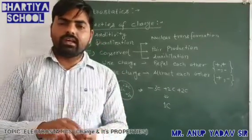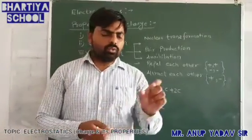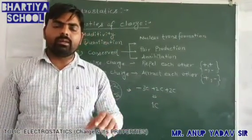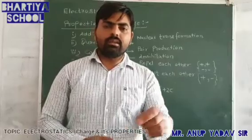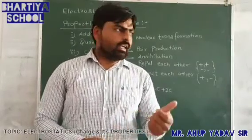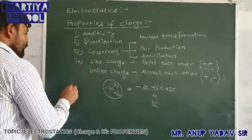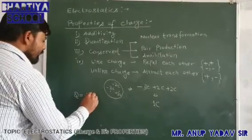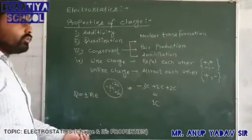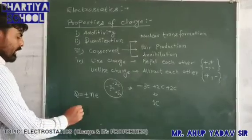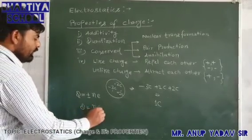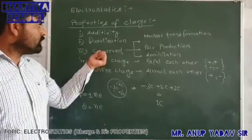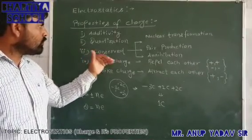The next property is quantization of charge. Quantization states that the net charge on an isolated body is always an integral multiple of the basic unit of charge. By formula, we can say Q = ±ne, and in magnitude form it is simply Q = ne.